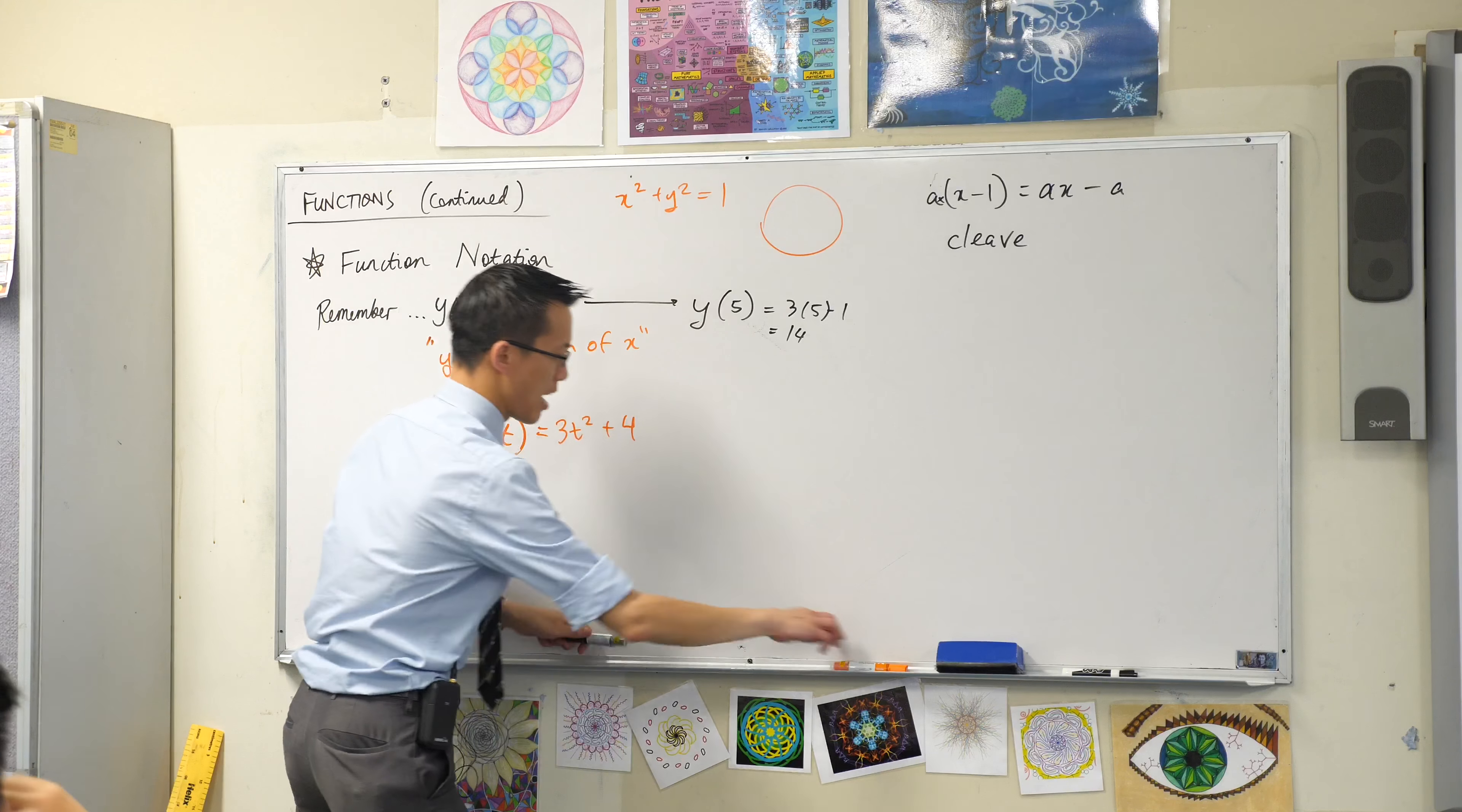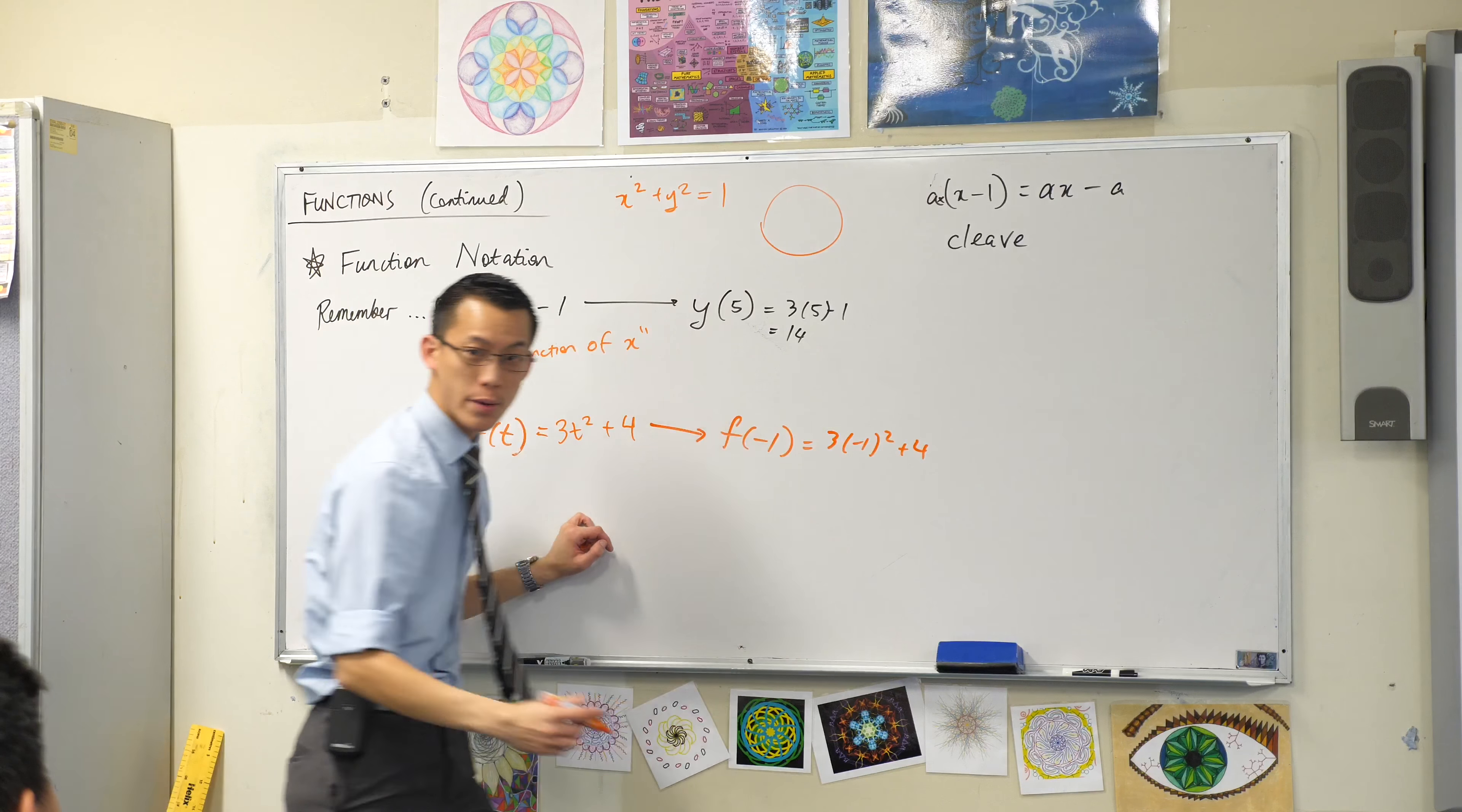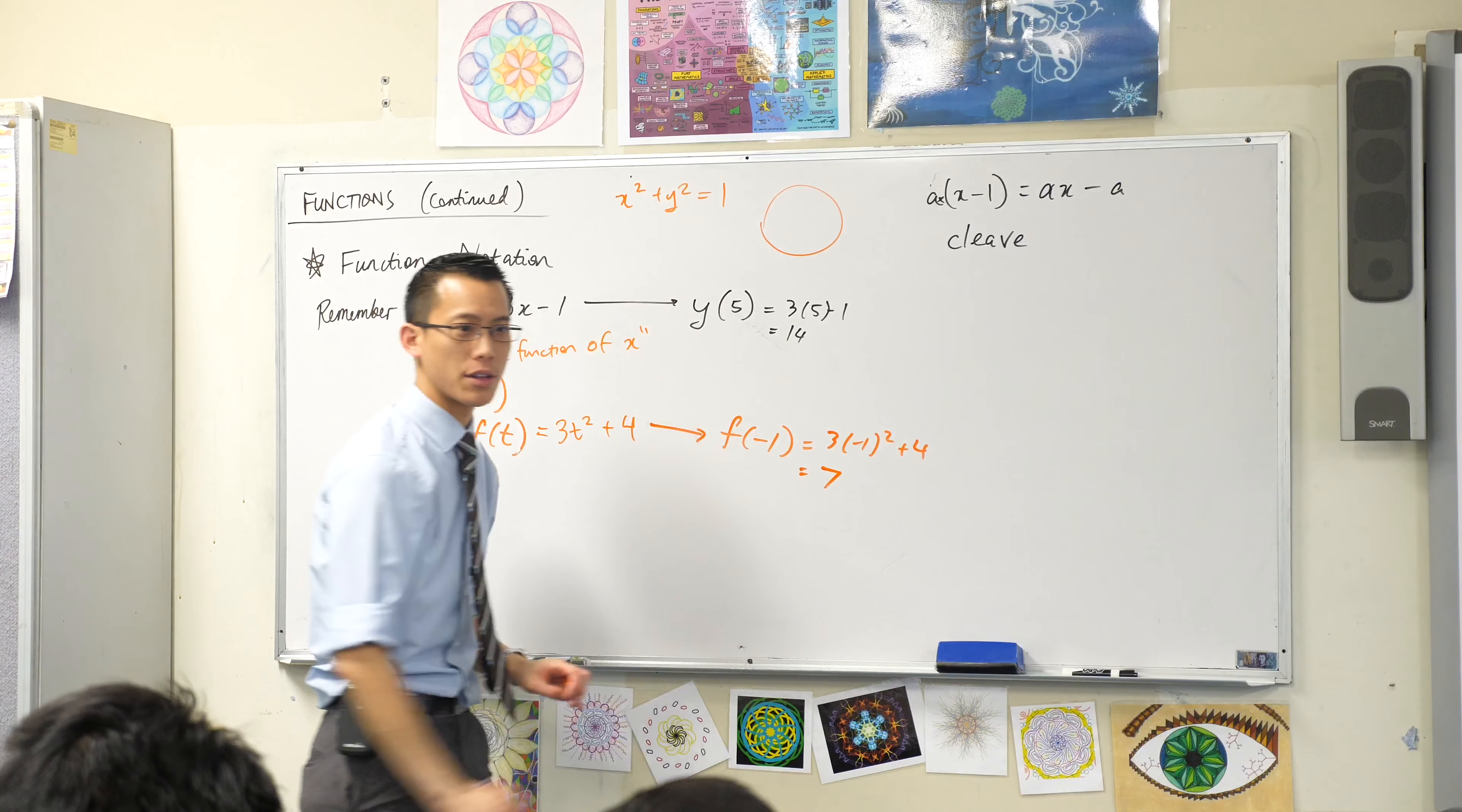So I would read that as y of 5, y of x, f of t. Let's try this one. How about something like, say, f of negative 1? What would that mean in this case? Yeah, Agni? Perfect. So everywhere Agni saw a t, he replaced it with a negative 1. We can go ahead and finish this. Negative 1 squared is just positive 1, right? Because the negatives cancel. 3 plus 4, that's 7.